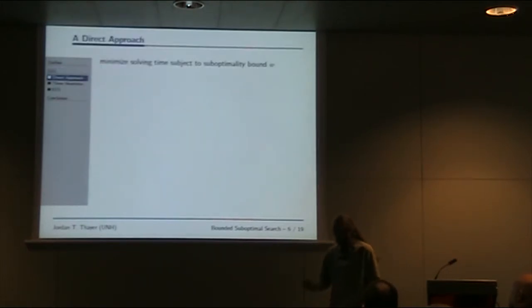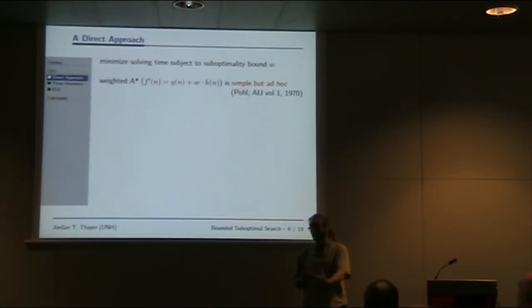Coming back to bounded suboptimal search, the stated goal is to find solutions within a suboptimality bound W as quickly as possible. The algorithm most people have heard about is weighted A-star. It evaluates nodes according to g(n) plus W times h(n). W is the suboptimality bound and h(n) is an admissible estimate of cost-to-go. This can work well, but it's ad hoc. Specifically, h(n) tells us nothing about how far away we are from the solution, and we need to know how close we are to solutions.